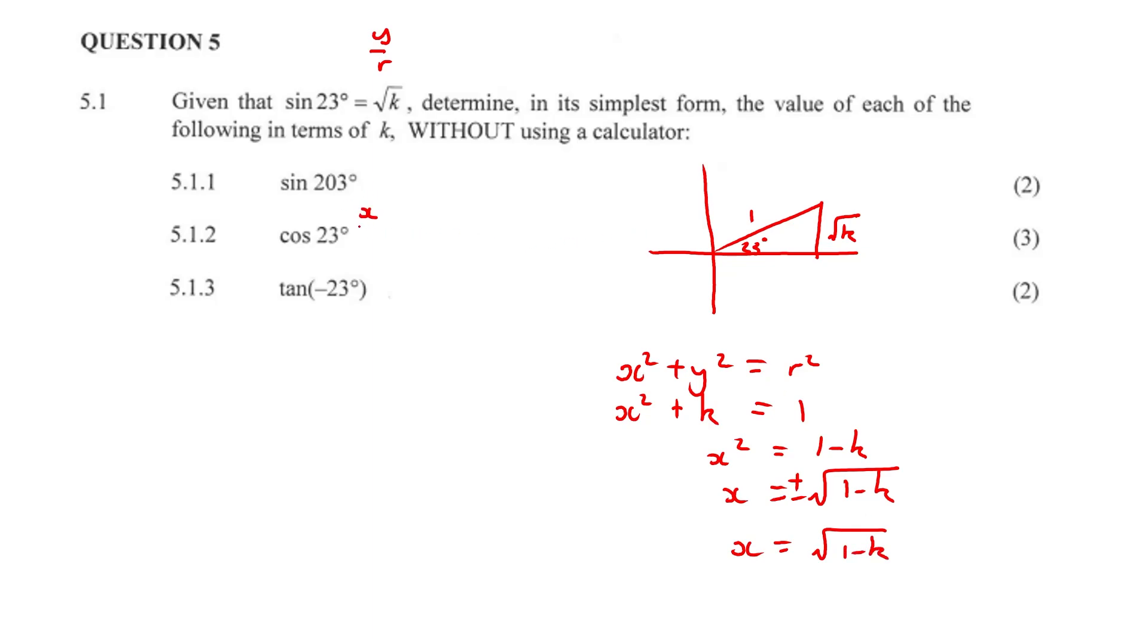Cos 23 has the ratio of X over R. Sine has the ratio of Y over R. Tan would have the ratio of Y over X. It's coming from SOHCAHTOA, just in case you were battling with it.